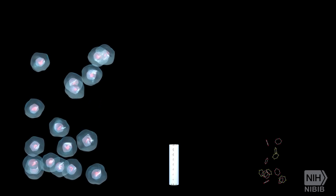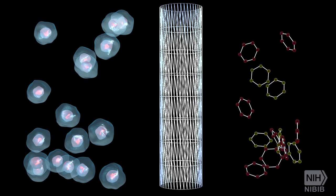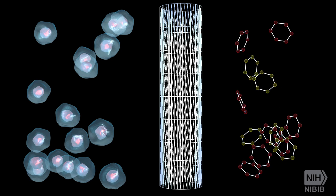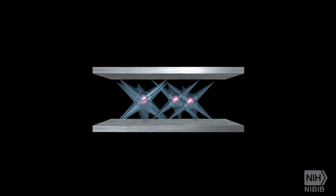Tissue engineering relies on four important factors: the right cells to do the job, the right environment such as a scaffold to support the cells, the right biomolecules like growth factors to make those cells healthy and productive, and physical and mechanical forces to influence the development of the cells.